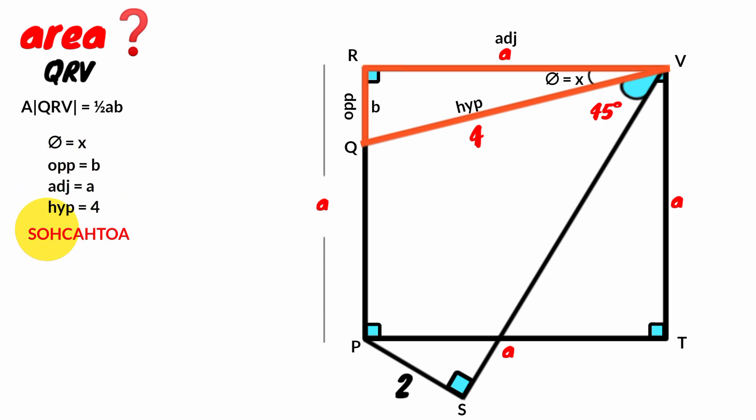From here, SOH means sine theta equal to opposite over hypotenuse. Theta is X. Opposite is B and hypotenuse is 4.